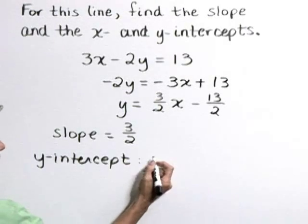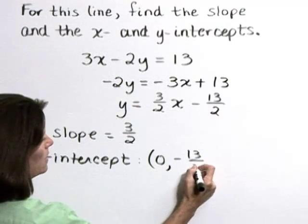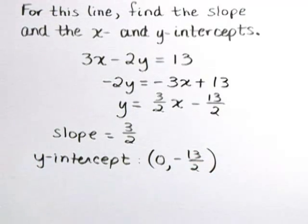Our y-intercept is negative 13 halves. Let's write that in point form as 0, negative 13 halves. Now lastly, we want to find the x-intercept.